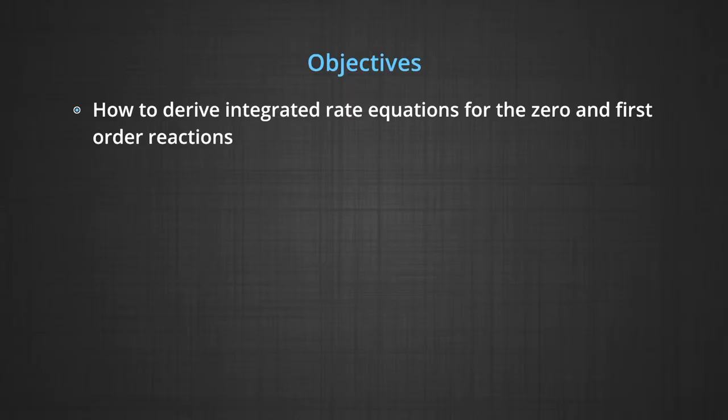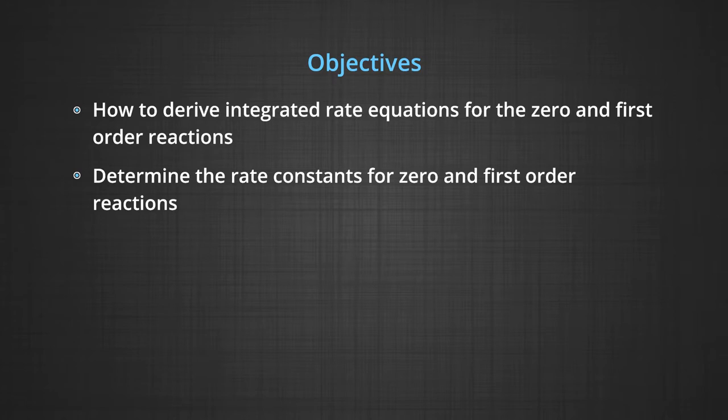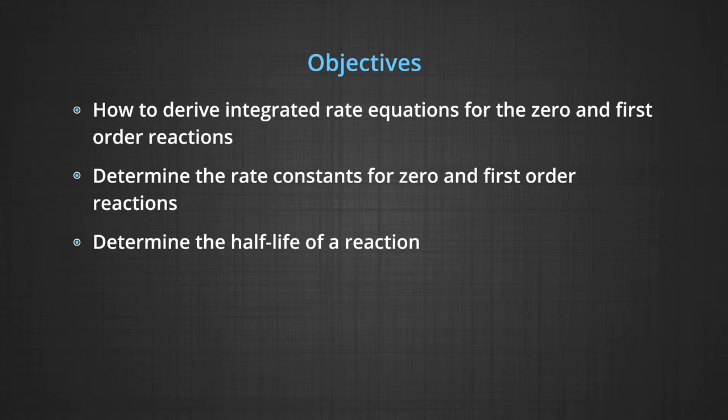In the previous module, you have studied about the dependence of rate of reaction on concentration. We defined rate law and rate constant and differentiated between the molecularity and the order of a reaction. Today, we will discuss how to derive integrated rate equations for zero and first order reactions, determine the rate constant, the half life of a reaction, and pseudo first order reactions.